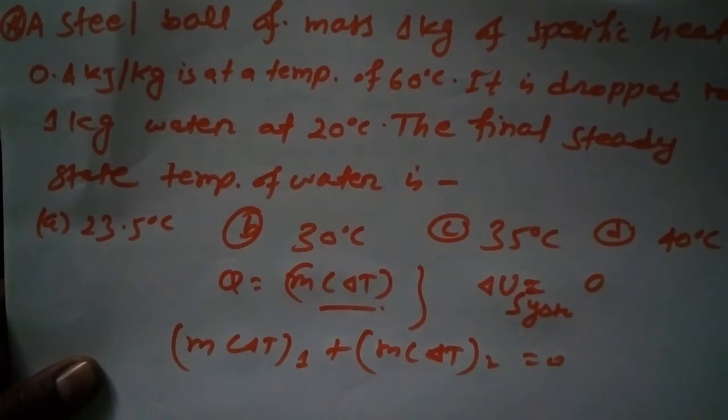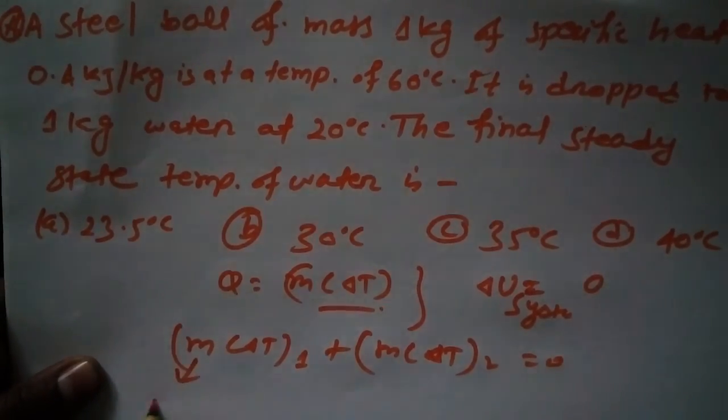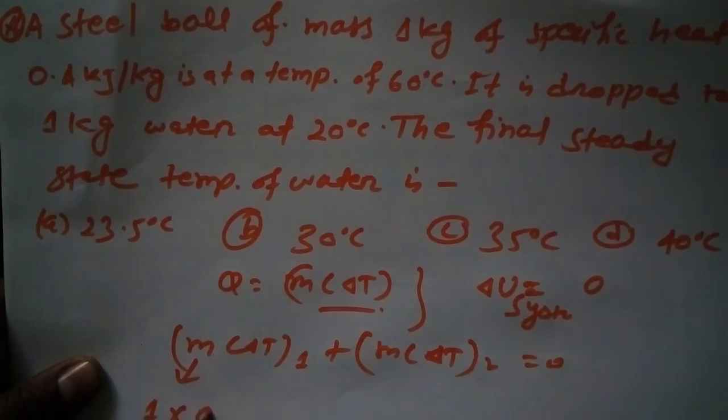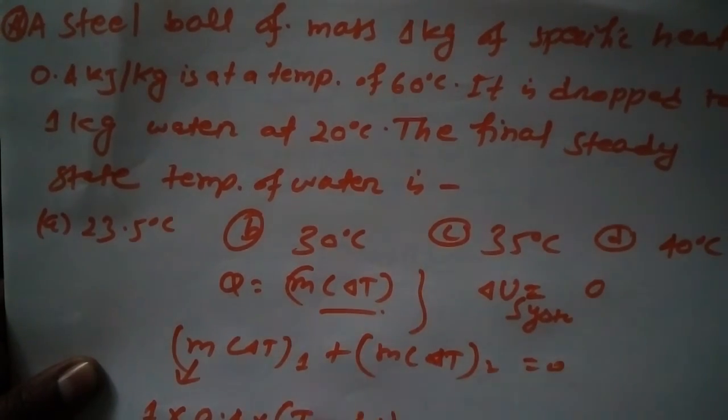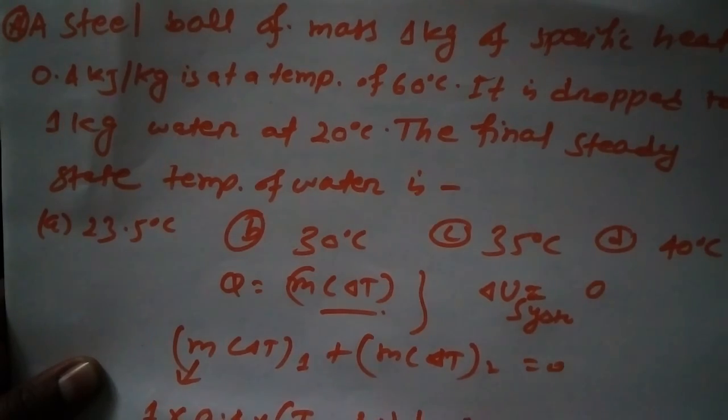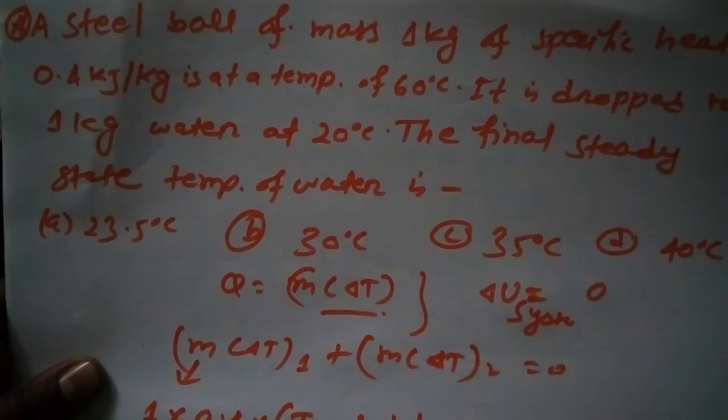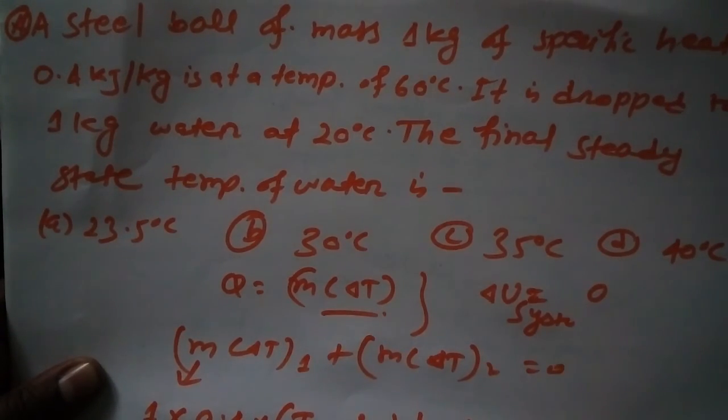Now we know mass 1 and this C here is 0.4, then T final temperature minus 60, and M again here 1 and T 1.48 and delta T would be T minus 20 is equal to zero.